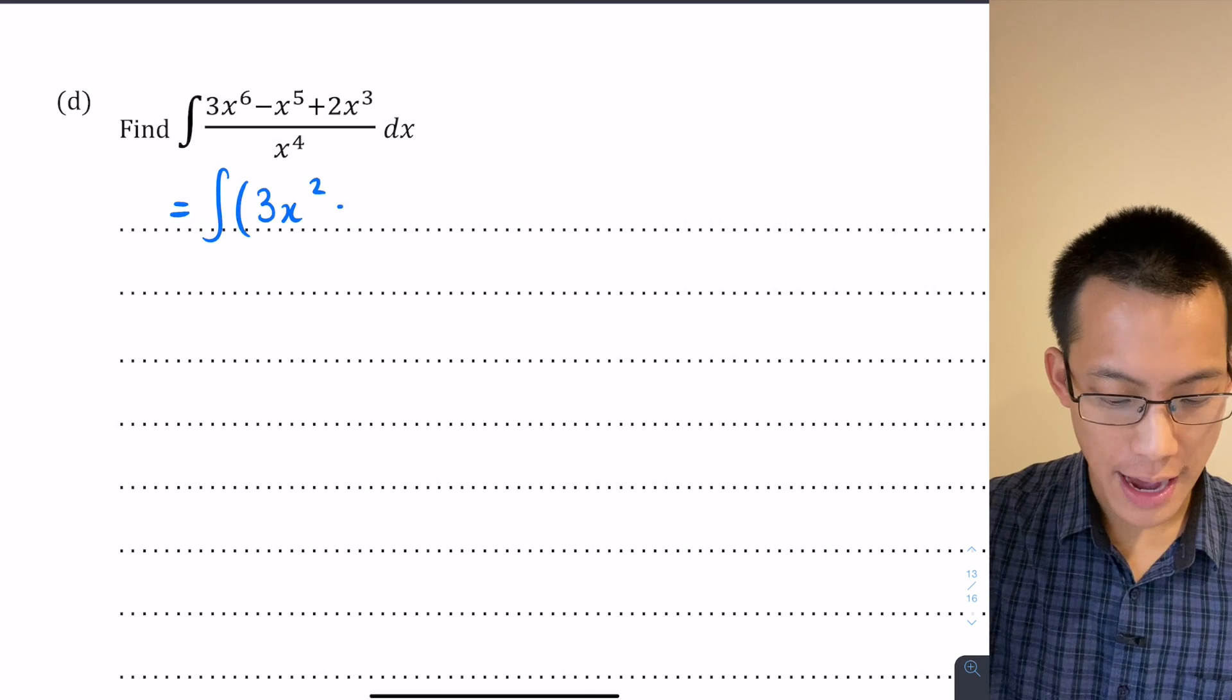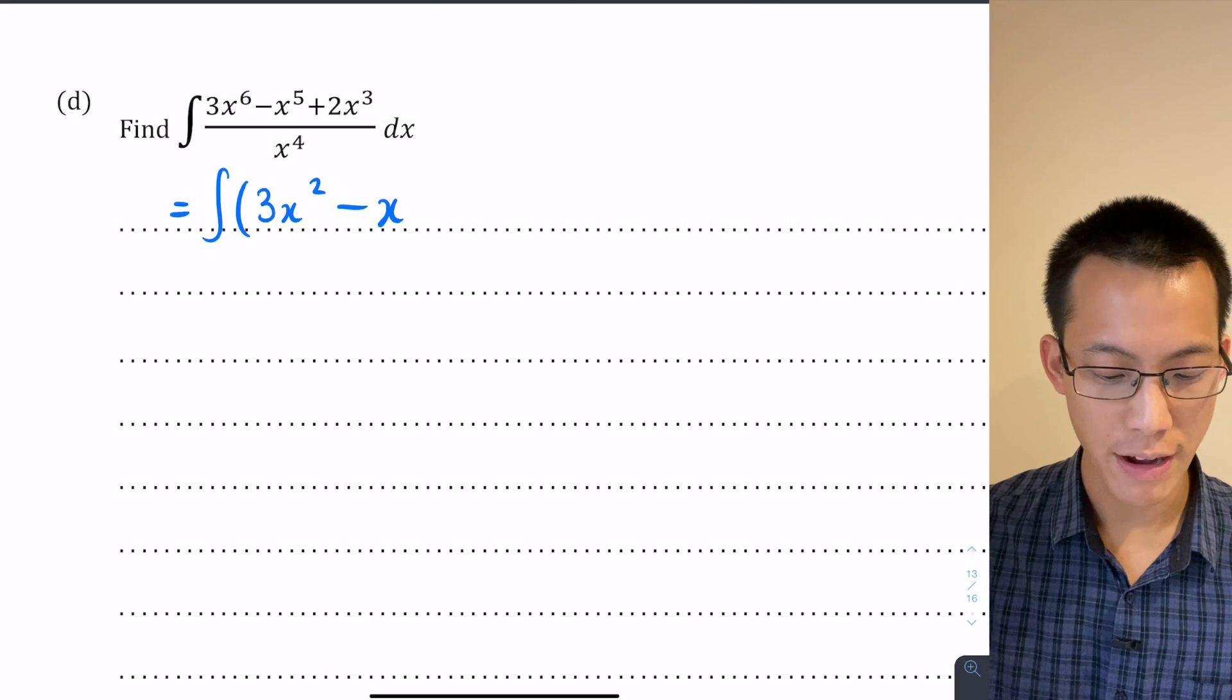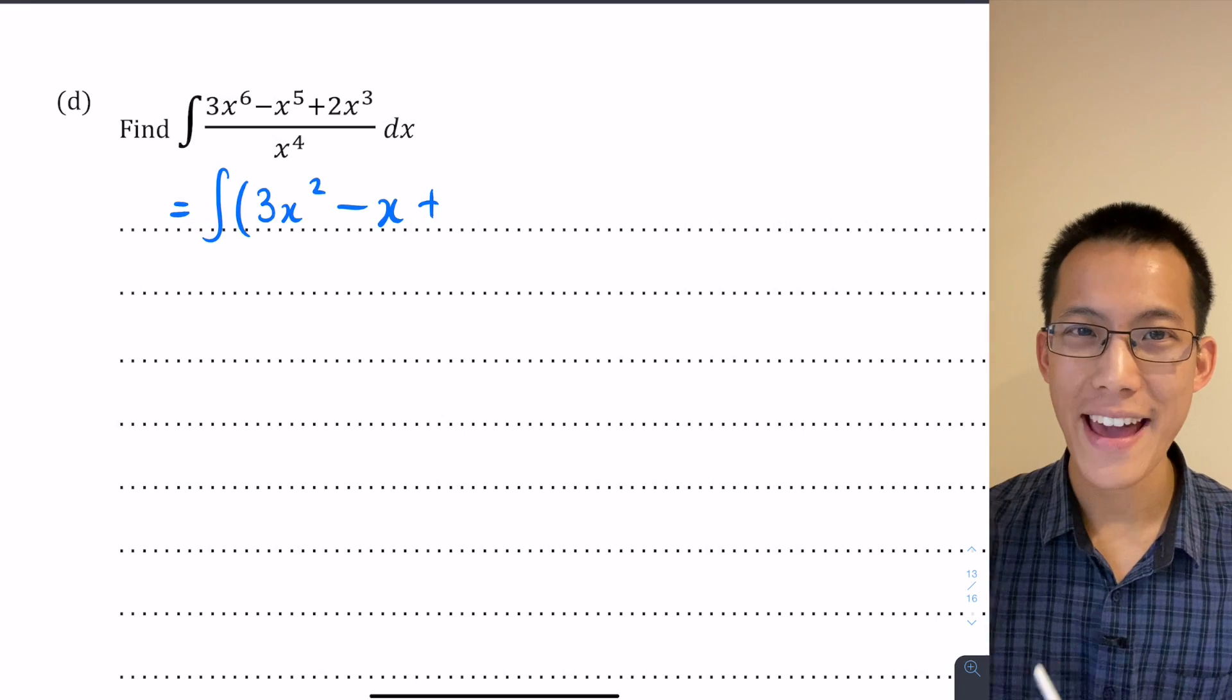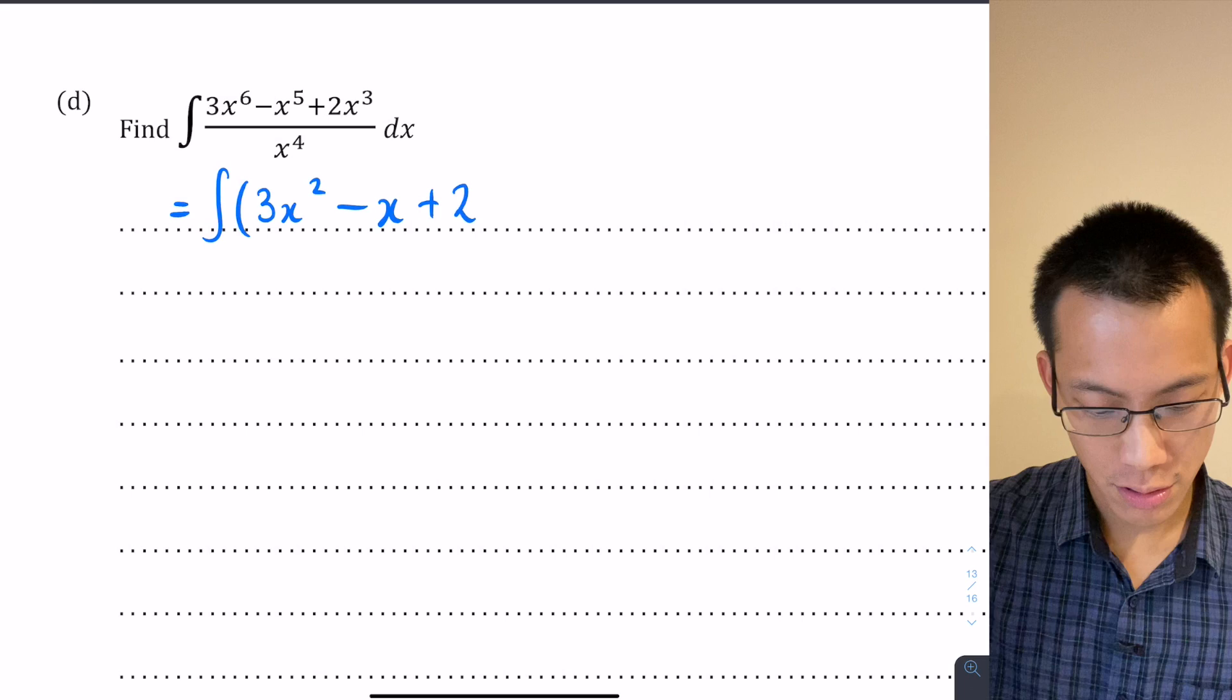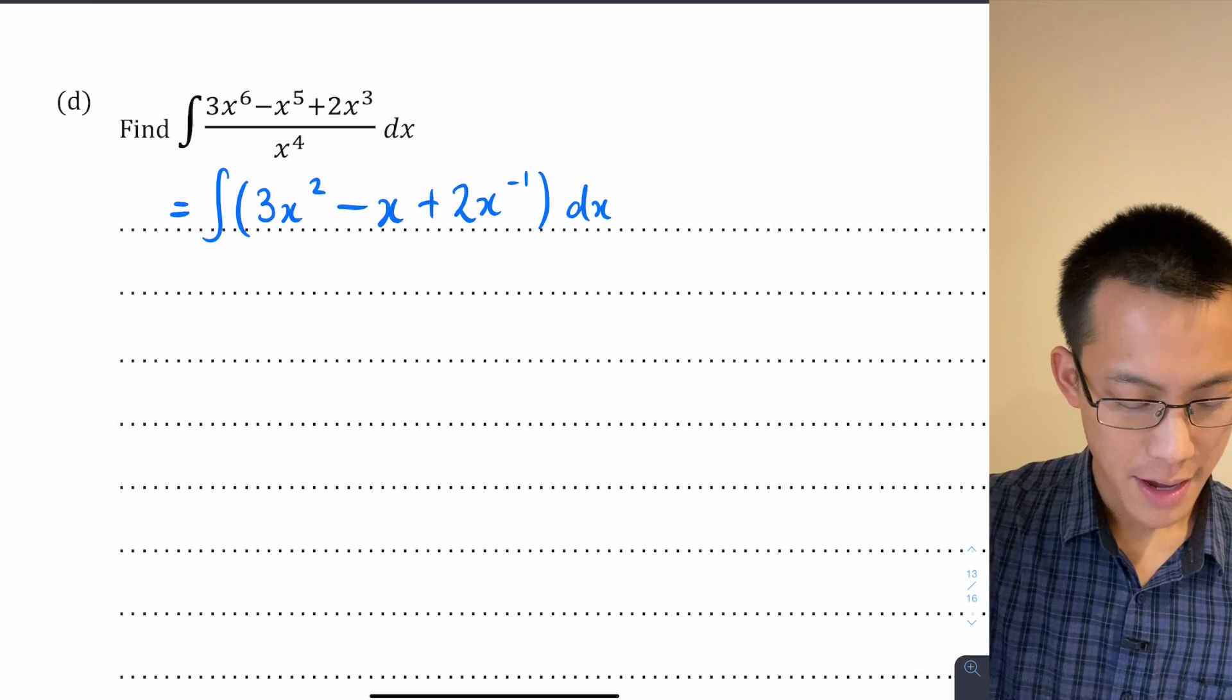Minus x to the 5, so there's the minus x to the 5 divided by x to the 4, leaves me with just a single x. And then lastly this 2x³ divided by x to the 4, there are more x's on the denominator than the numerator so that leaves me with 2x to the negative 1 dx.